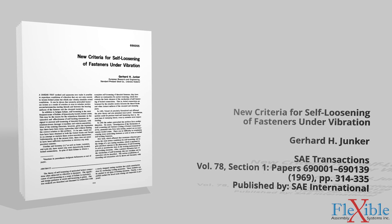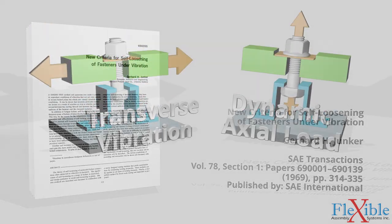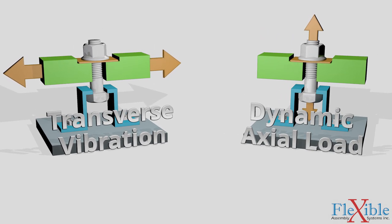In 1969, German engineer Gerhard Juncker wrote a paper which detailed how he discovered that transverse vibration was far more severe than dynamic axial loads when it came to self-loosening fasteners. Repeated transverse movements which have a greater force than the frictional force created by clamp load will completely loosen a fastener.